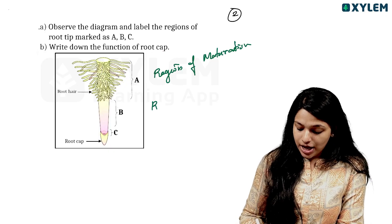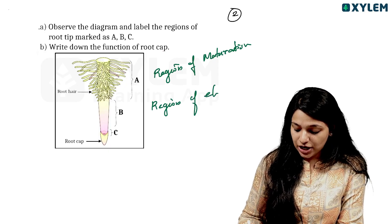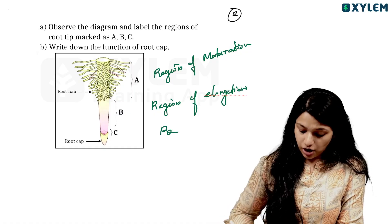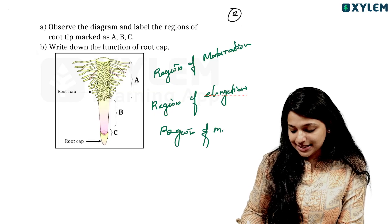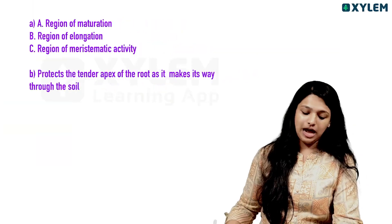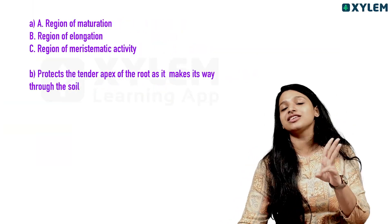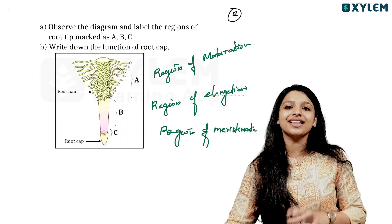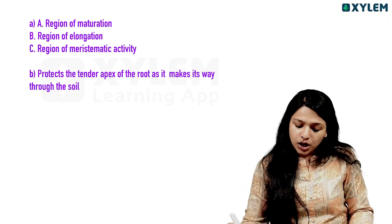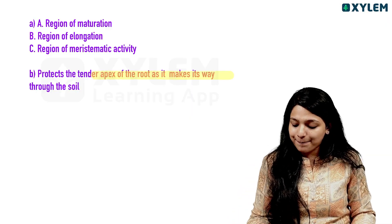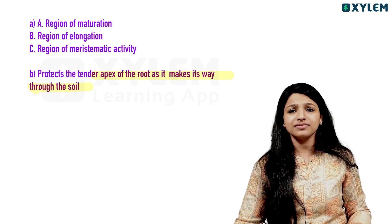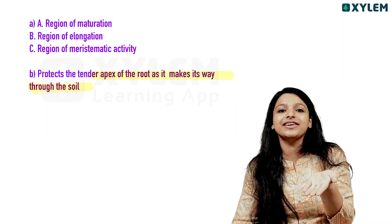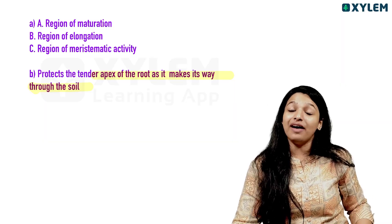So, B is the Region of Elongation, and C is the Region of Meristematic Activity. To summarize: Region of Maturation, Region of Elongation, Region of Meristematic Activity. Root Cap is at the very tip. The function of the Root Cap is to protect the tender apex of the root as it makes its way through the soil — it is a protective cover.